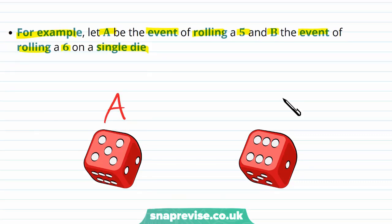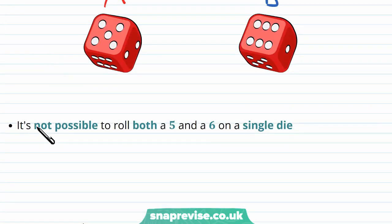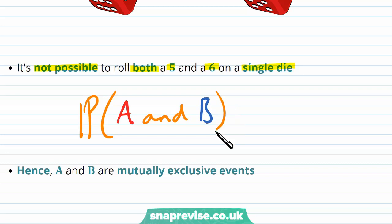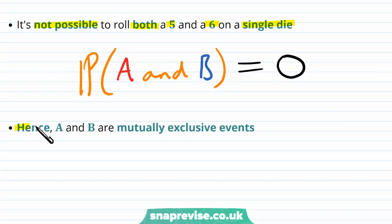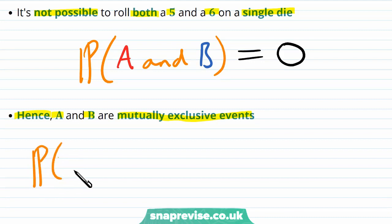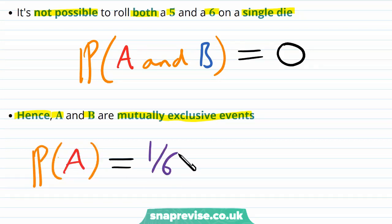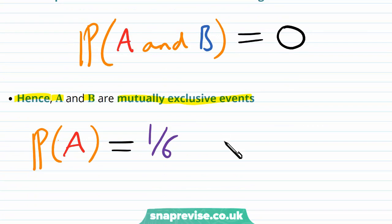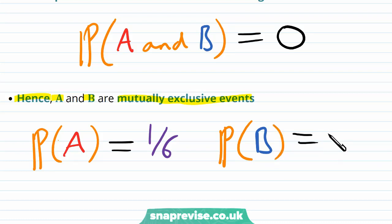In this case, it is not possible to roll both a 5 and a 6 on a single die, i.e. the probability of Event A and simultaneously Event B occurring is precisely zero. And therefore A and B are Mutually Exclusive Events. The probability of Event A is precisely one-sixth, because there are six different options and getting a 5 has probability one-sixth. Similarly, the probability of Event B occurring is also one-sixth for the same exact reason.